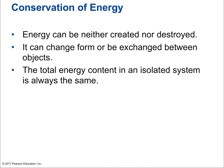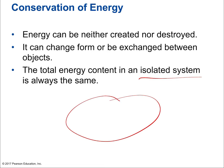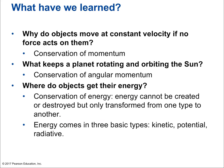Energy can neither be created nor destroyed — it can only change forms. It can change into matter, but matter itself is a form of energy. The total energy content in an isolated system is always the same. A truly perfect isolated system is hard to define because gravitational force exists infinitely far — it just becomes infinitely weak. The universe itself, created by the Big Bang, may be a truly isolated system, but maybe there are other universes. We don't know.